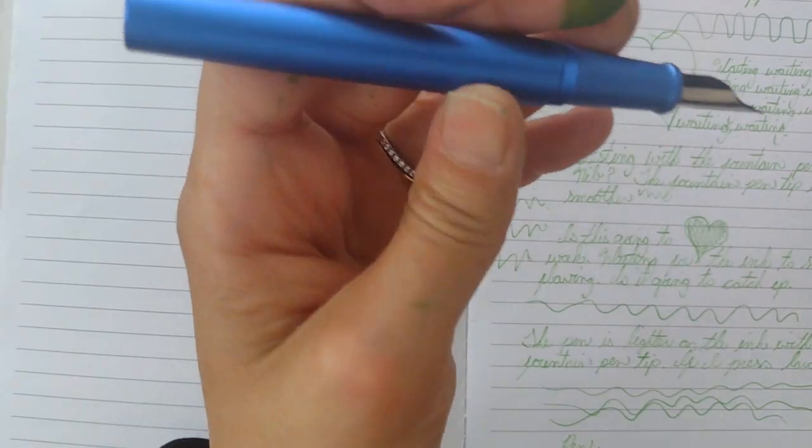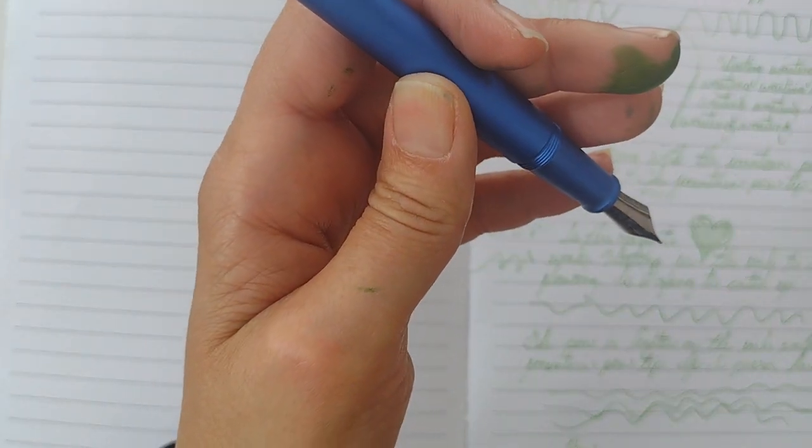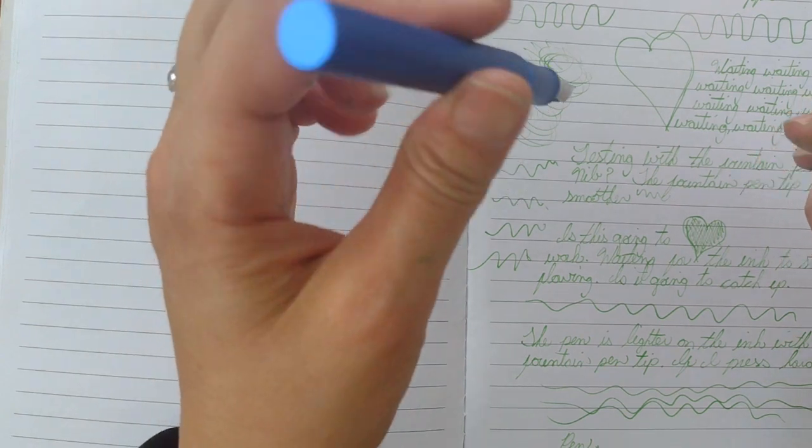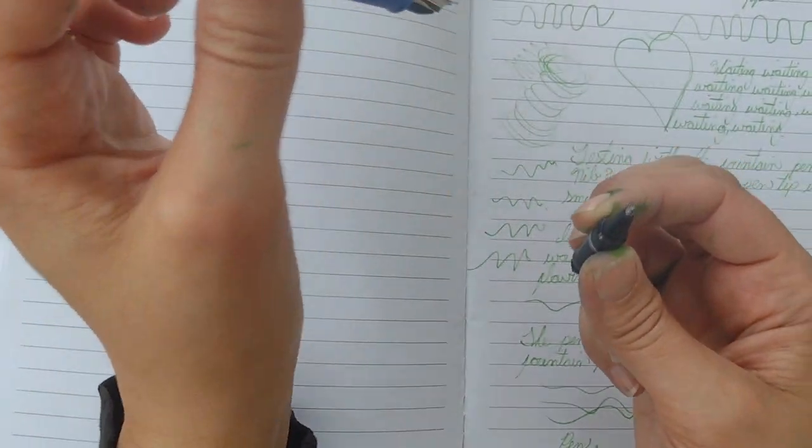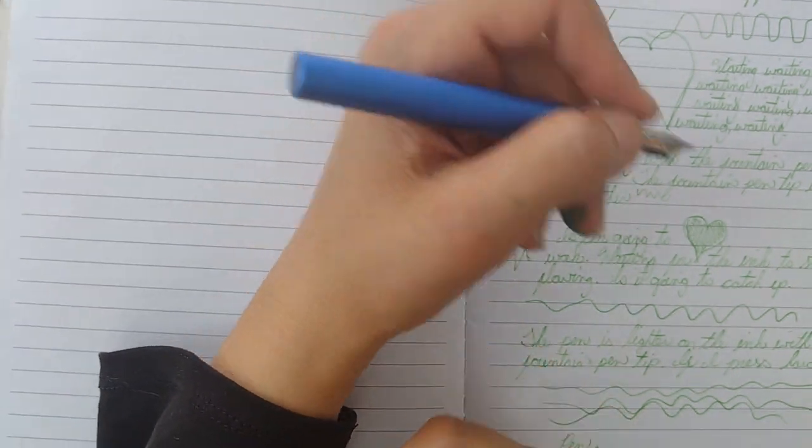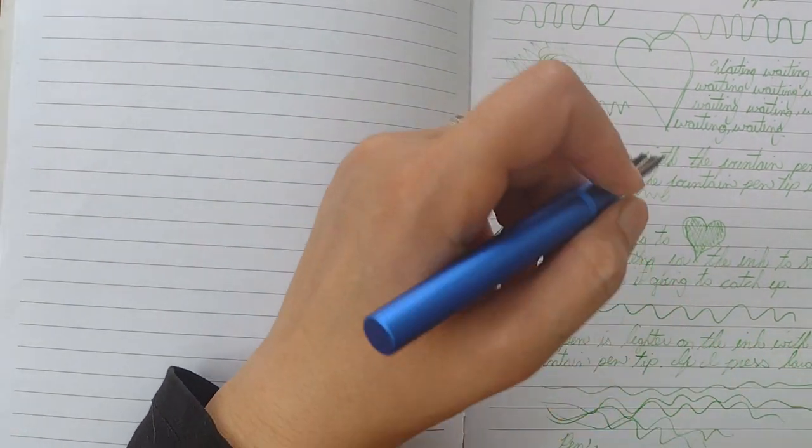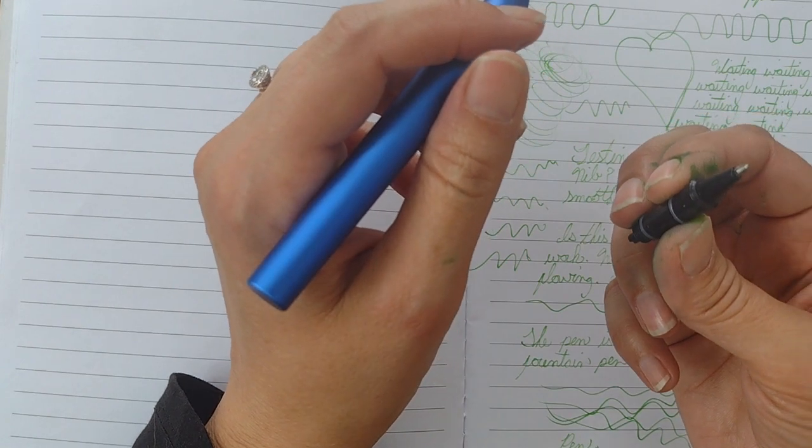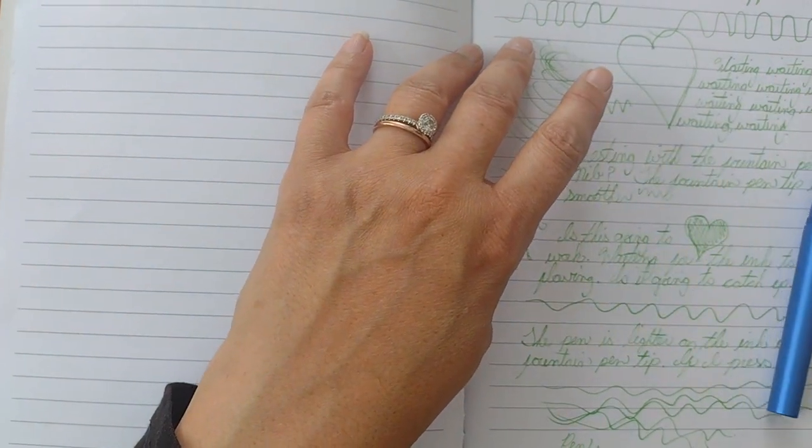So just be aware. I think the fountain pen tip does write a lot lighter than the roller ball tip. It is a little bit on the scratchy side. And sometimes it does skip a little. But overall, I think it's a pretty cool pen. I really love the roller ball feature.